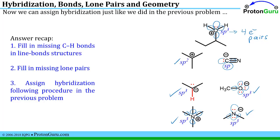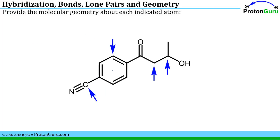The procedure for charged atoms is quite similar to the first problem: fill in any missing CH bonds in the line-bond structure, fill in the missing lone pairs — slightly more involved when you have charges — and then assign the hybridization by counting the pairs that need hybrid orbitals to hold them.